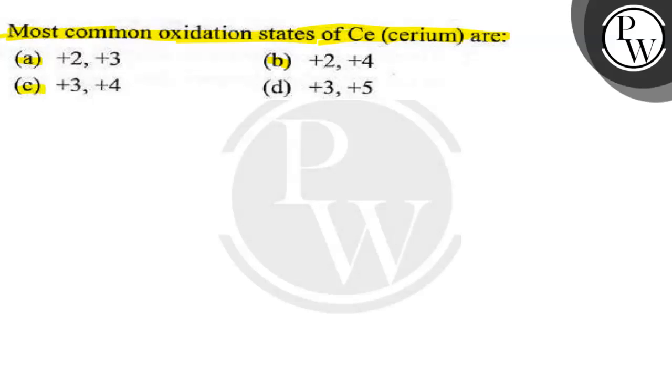A, B, C, D, and we need to select one correct option. First of all, we need to see what is the cerium atomic number, that is equal to 58.